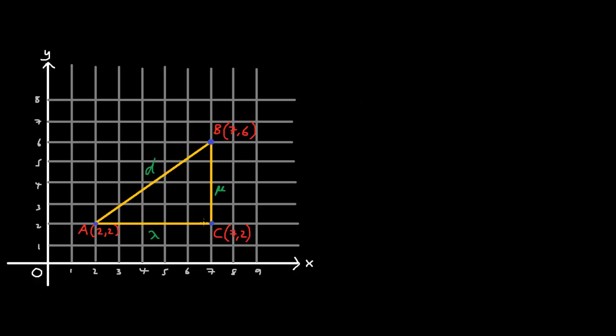Now to my left here we have a right-angled triangle and because of Pythagoras we know that lambda squared plus mu squared equals distance squared. In this diagram lambda is the length from A to C and mu is the length from B to C and d which is the distance is the length from A to B.